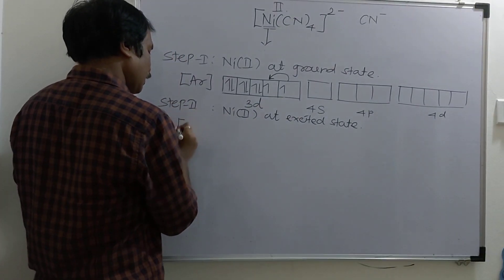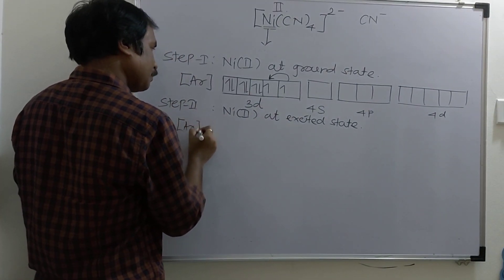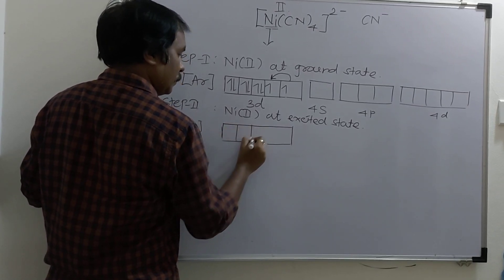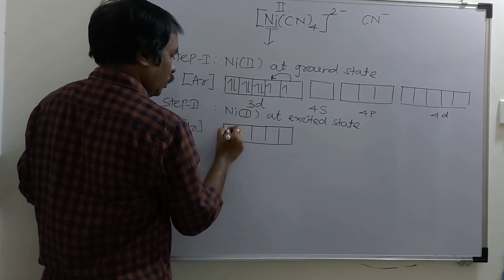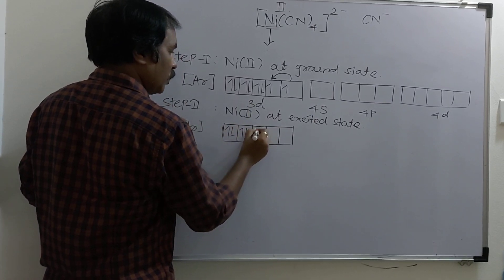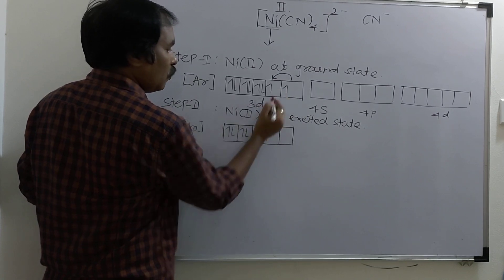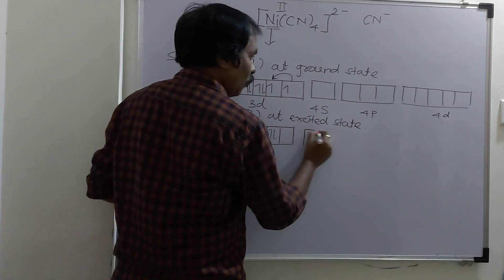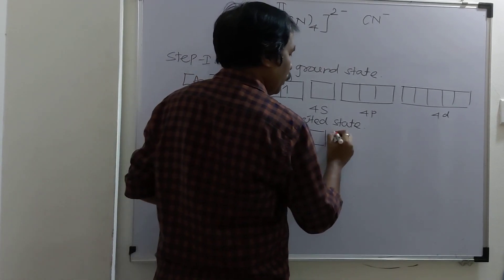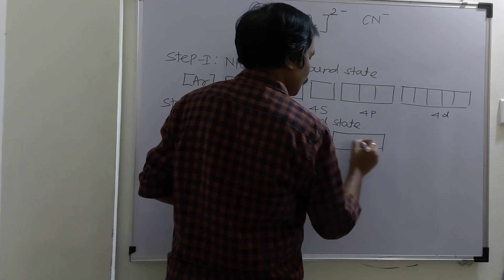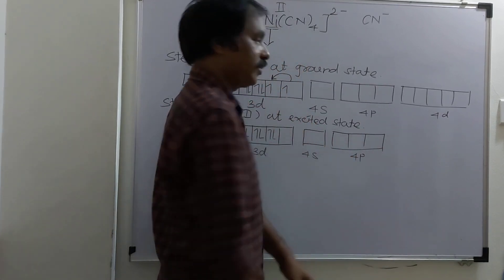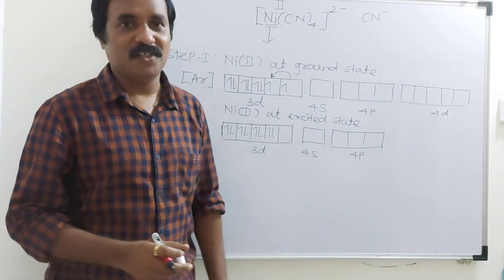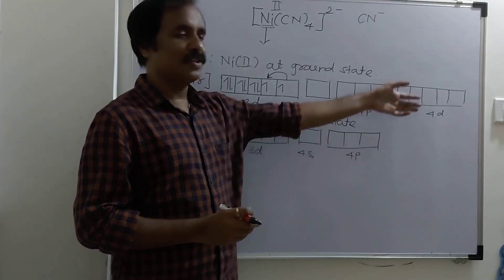What is the excited state electronic configuration when there is attack of 4 strong ligands? Now here: two electrons already present in each orbital. After pairing, the 3d has 8 electrons all paired, 4s and 4p are empty. How many empty atomic orbitals are required? Only 4 empty atomic orbitals are required. Lot of empty atomic orbitals are there.